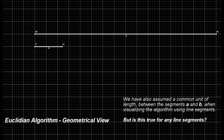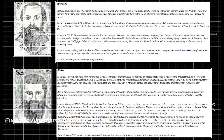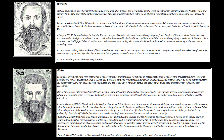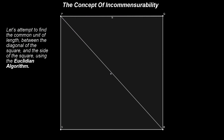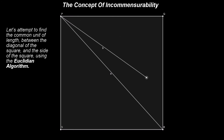But is this true for any line segments? Plato's dialogue entitled Meno records a discussion between Socrates and a slave boy regarding the problem of doubling the square. Next, let us use a similar approach to explain the concept of incommensurability. Let's consider a square PQRS and draw one of its diagonals, PR. Let's call the length of the diagonal A, and the length of the side of the square B. Next, let's attempt to find the common unit of length between the diagonal of the square and the side of the square using the algorithm described above.